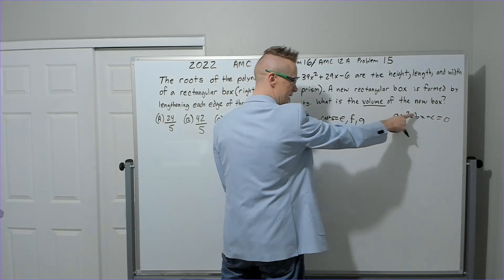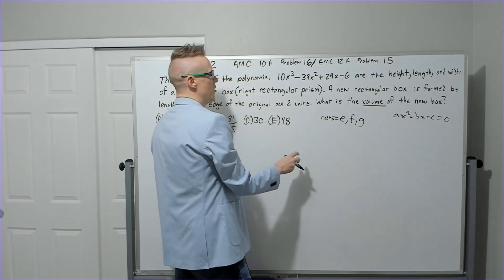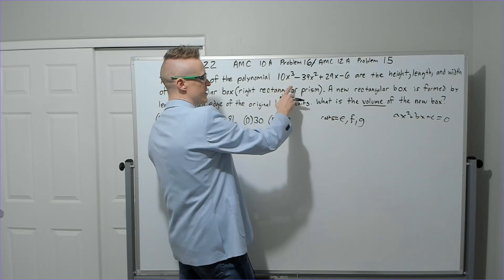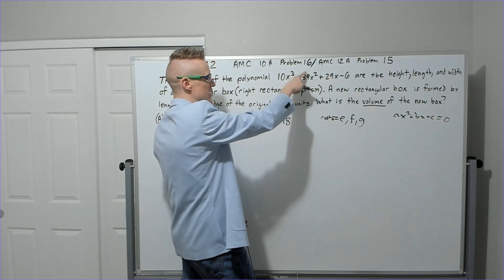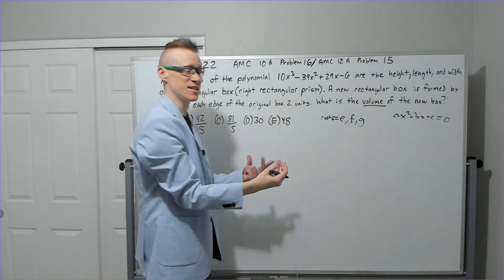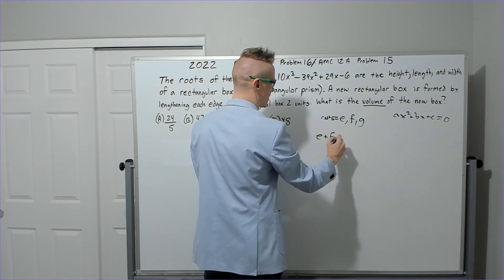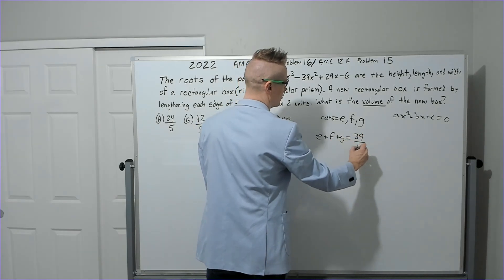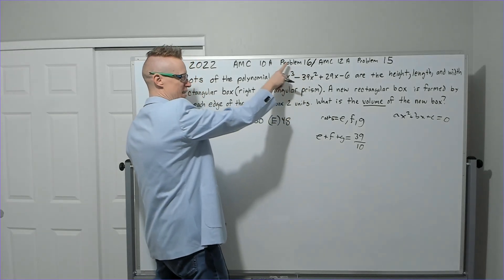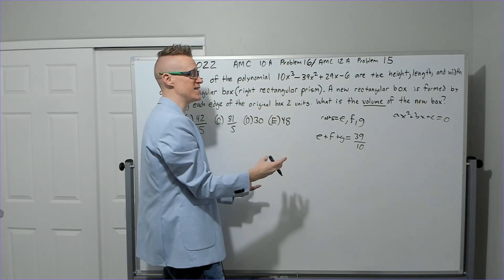When it's a quadratic, for instance, ax² + bx + c, it is positive c over a. And the sum of the roots is negative b over a. But as we move to cubics, it's going to still stay negative second coefficient over leading coefficient for the sum. For instance, we know that e + f + g equals 39 over 10.